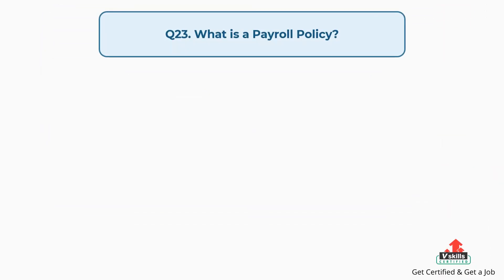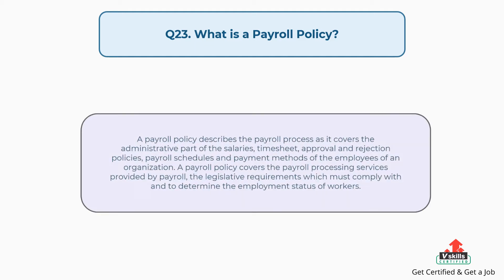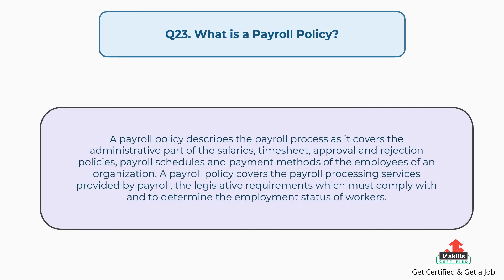Question number twenty-three: What is a payroll policy? The answer is, a payroll policy describes the payroll process as it covers the administrative part of the salaries, timesheet, approval and rejection policies, payroll schedules and payment methods of the employees of an organization. A payroll policy covers the payroll processing services provided by payroll, the legislative requirements which must be complied with, and to determine the employment status of workers.